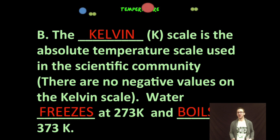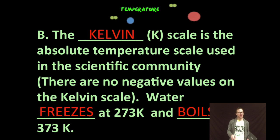But you also want to be comfortable with the Kelvin scale. And this is an important scale because it's an absolute temperature scale that we use in the scientific community. There are no negative values on the Kelvin scale, which is important when we're doing some calculations. On this scale, water freezes at 273 Kelvin and boils at 373.